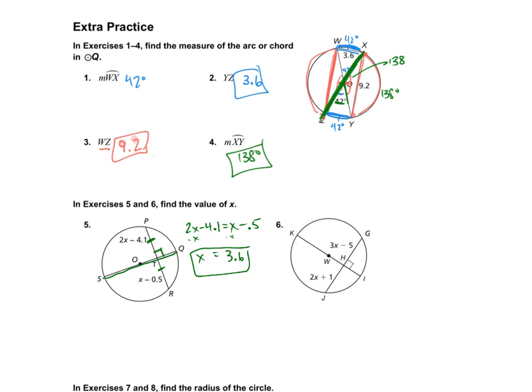Moving on to the next problem. Same situation. This is a diameter, this is perpendicular. So these parts will be congruent. So 3X minus 5 will be equal to 2X plus 1. So X will be 6.